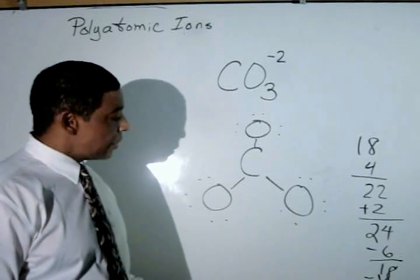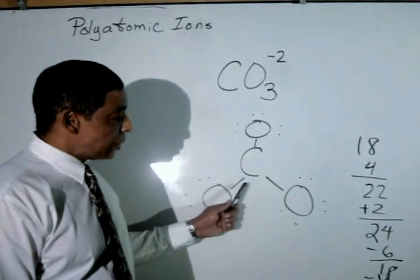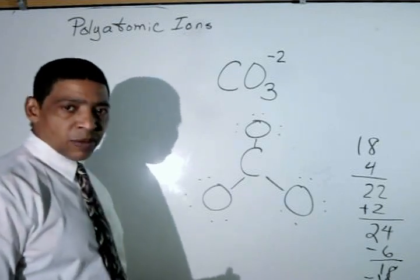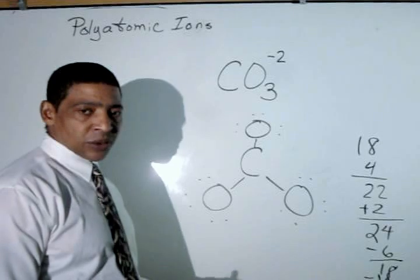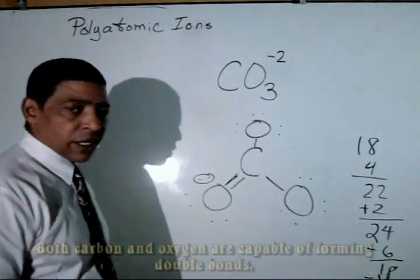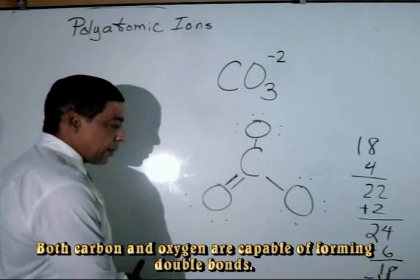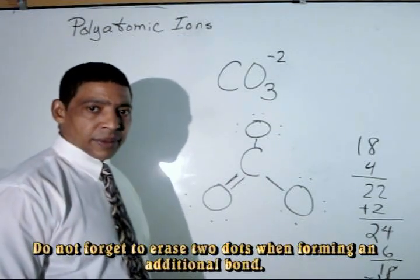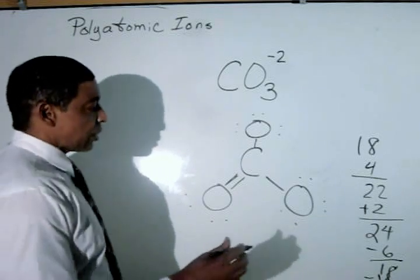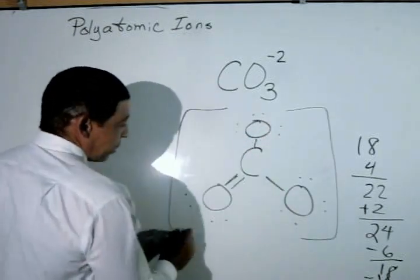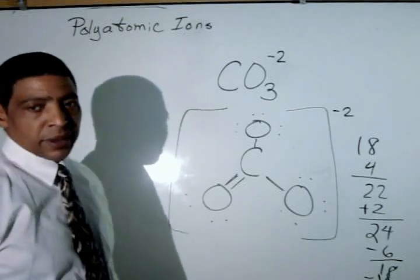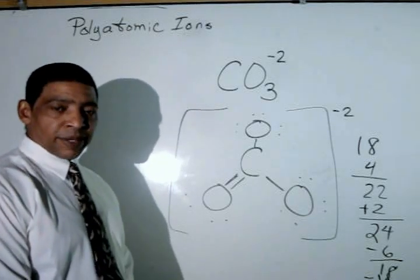Carbon is not satisfied, since carbon is now sharing three pairs of electrons for a total of six. To completely satisfy the carbon atom, we must create a double bond between one of these oxygens and the central carbon atom. We take this pair of electrons and share it with the carbon, and erase away that pair. To complete the Lewis structure, place the carbonate in brackets with the oxidation number written outside of the brackets.